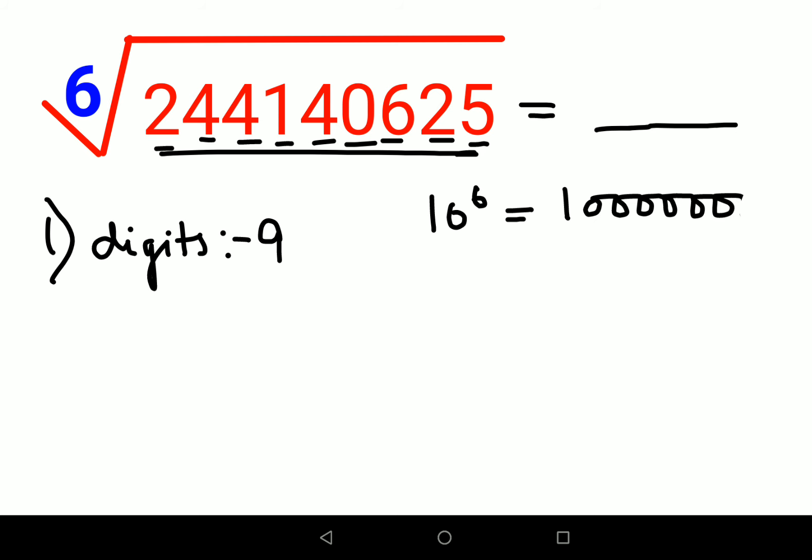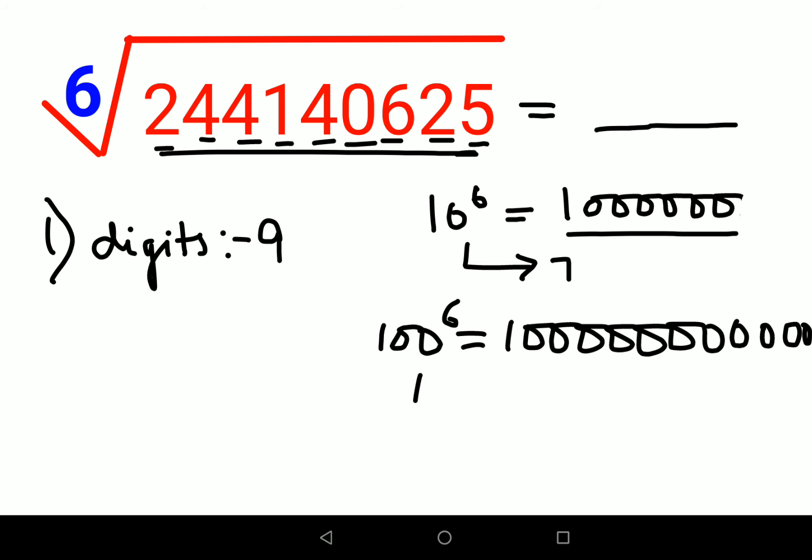Now let's say if the answer was a three digit number, let's try to understand what will be the number of digits of 100 raised to 6. So we'll have 1 and then 12 zeros. So there are 13 digits in this particular case.